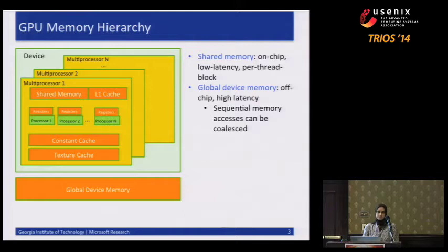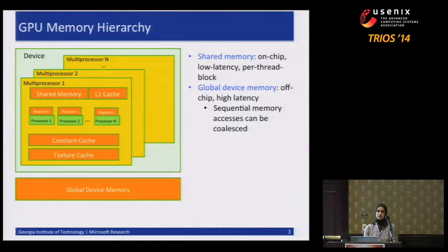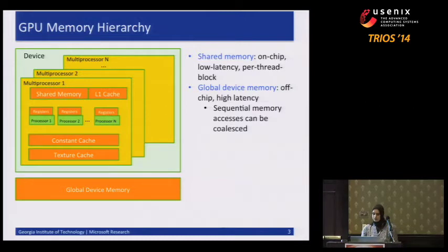In the case of global memory, because it's off-chip, the GPU hardware allows for memory accesses to be coalesced. That means if threads within a warp are accessing sequential or contiguous locations of memory, those accesses will be coalesced into a single transaction. This really improves the memory bandwidth for global memory.